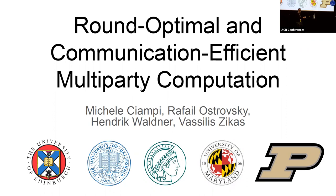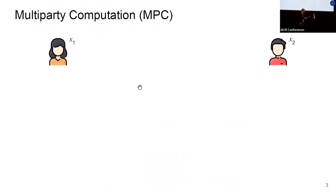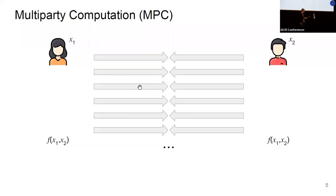Let's directly start with some motivation for multi-party computation. We have multiple parties who want to jointly compute some function. Here we have Alice and Bob, both with their inputs x1 and x2, and in the end they want to learn f applied on x1 and x2 without revealing any more information about their private inputs. They do this by interacting in several rounds of communication, exchanging messages with each other.